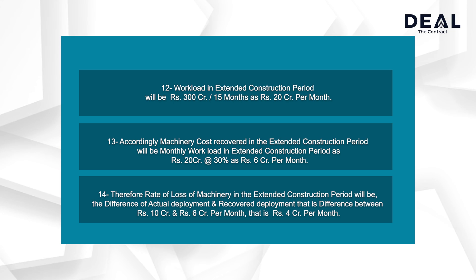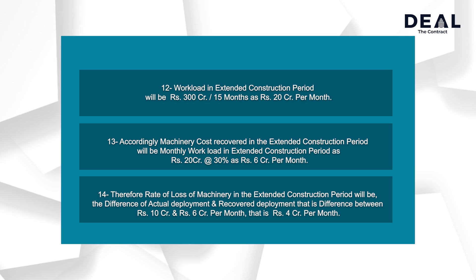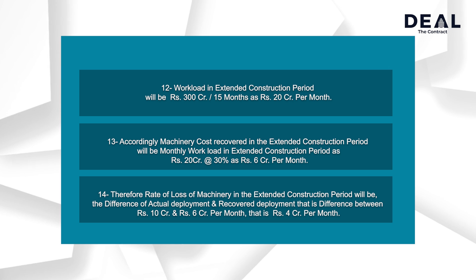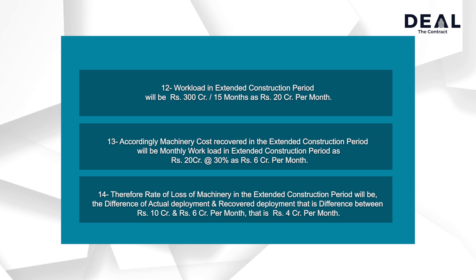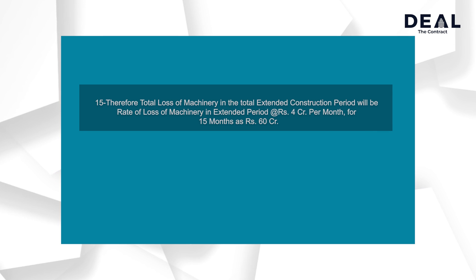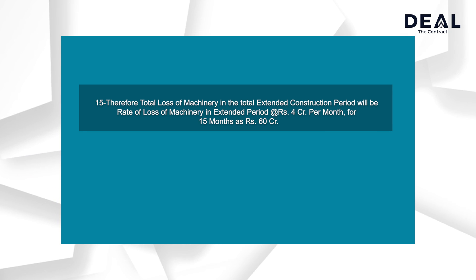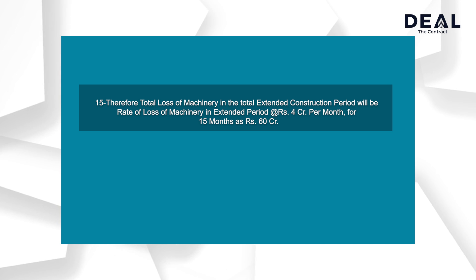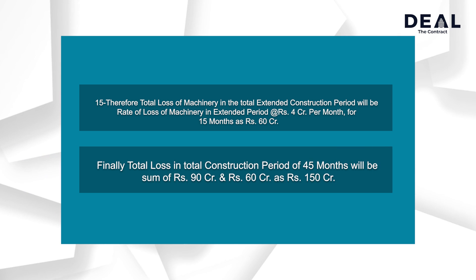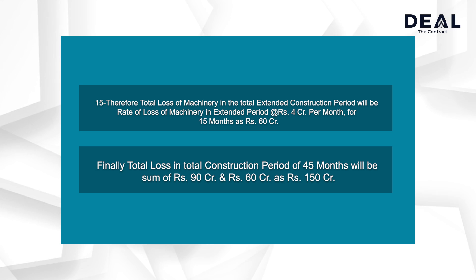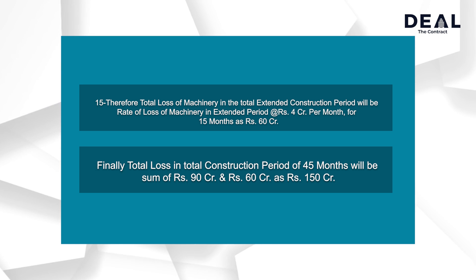Therefore, the rate of loss of machinery in the extended construction period will be the difference of actual deployment and recovered deployment, i.e. difference between Rs. 10 crore and Rs. 6 crore per month, which is Rs. 4 crore per month. Therefore, total loss of machinery in the extended period will be 15 months at Rs. 4 crore per month, i.e. Rs. 60 crore in total. Finally, the total loss in the total construction period of 45 months will be the sum of Rs. 90 crore and Rs. 60 crore, i.e. Rs. 150 crore.